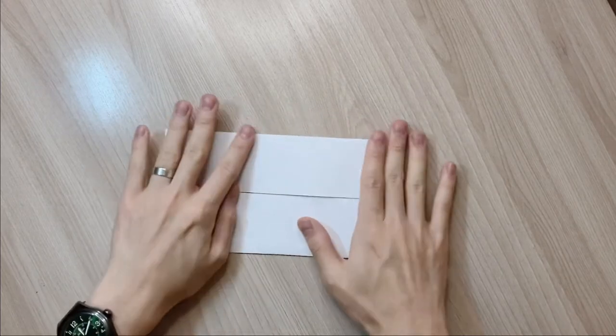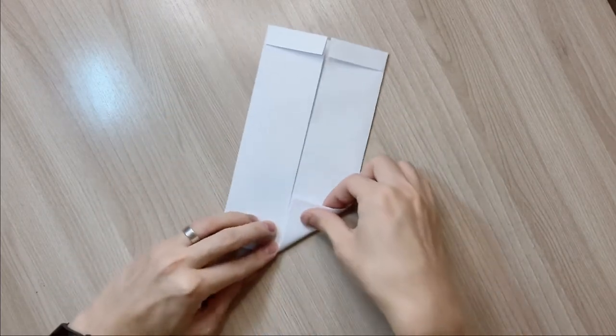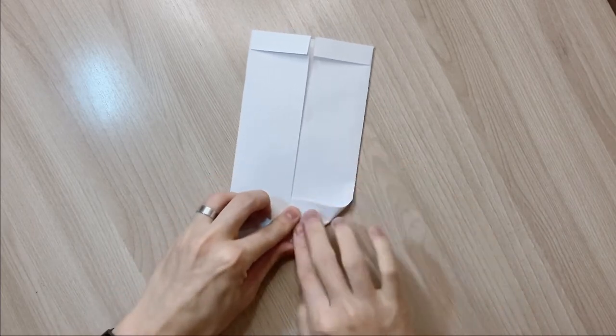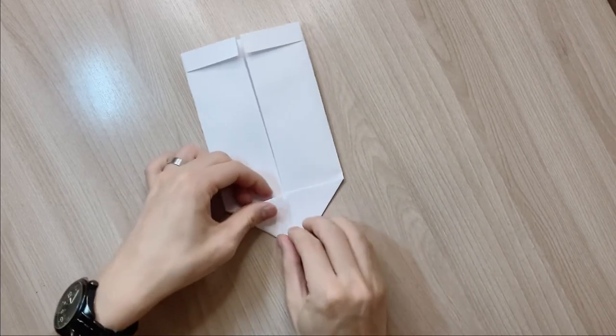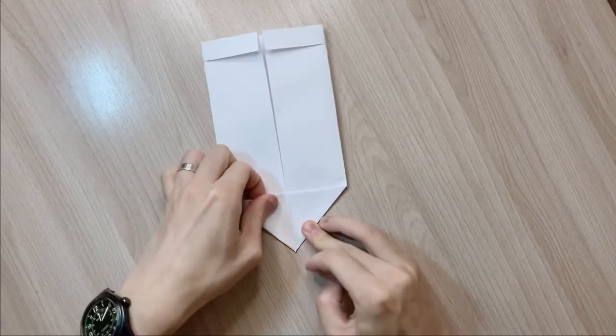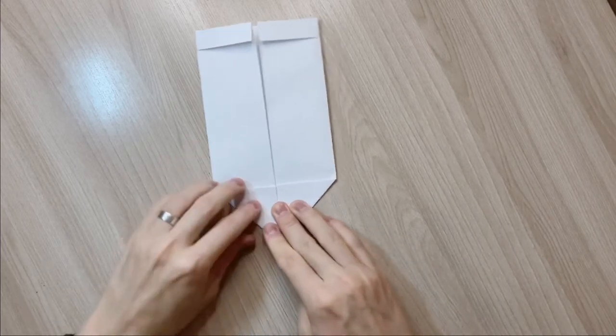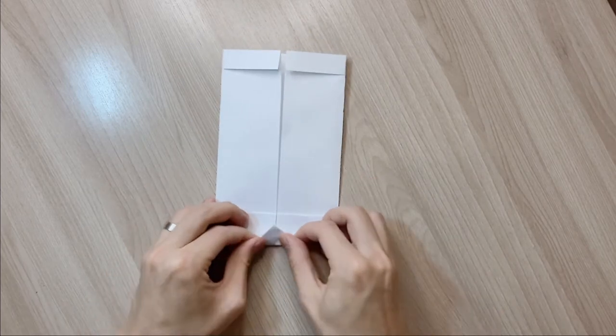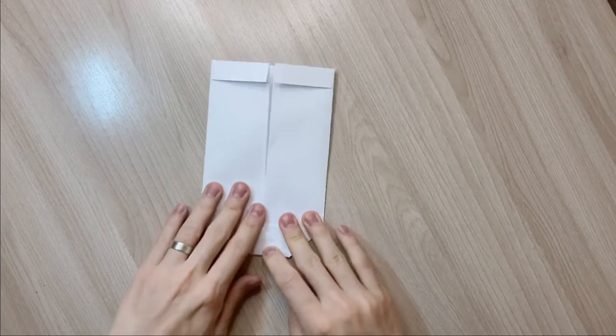Now you're gonna turn the paper vertically and fold the corners, the bottom corners, towards the center line. And now fold the bottom corner towards the vertical line, as you can see here.